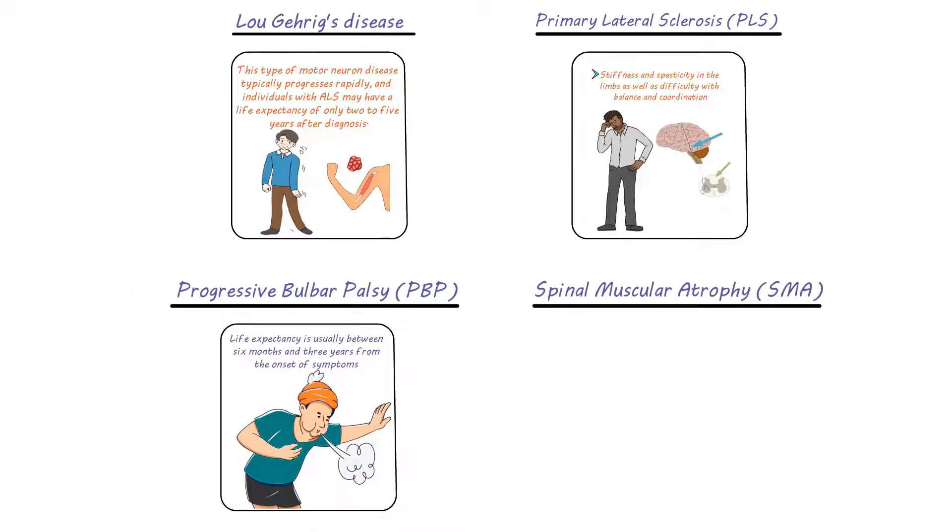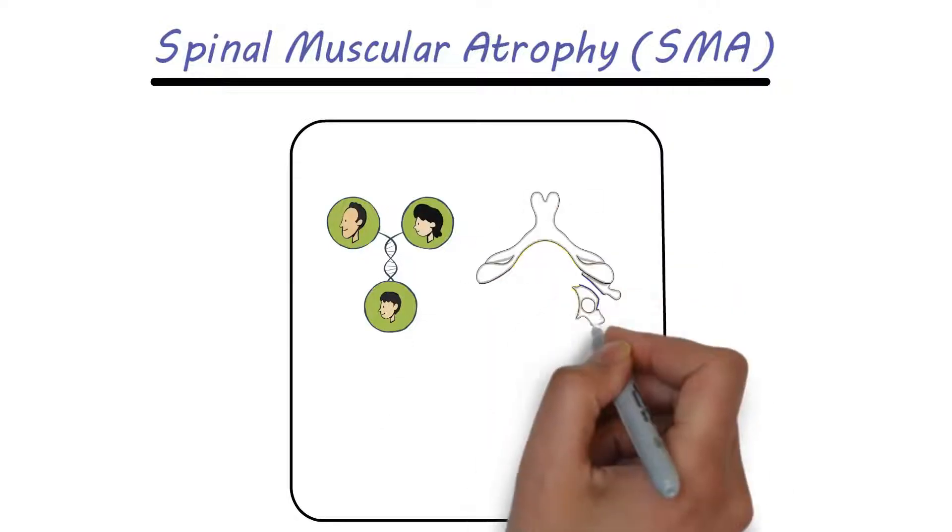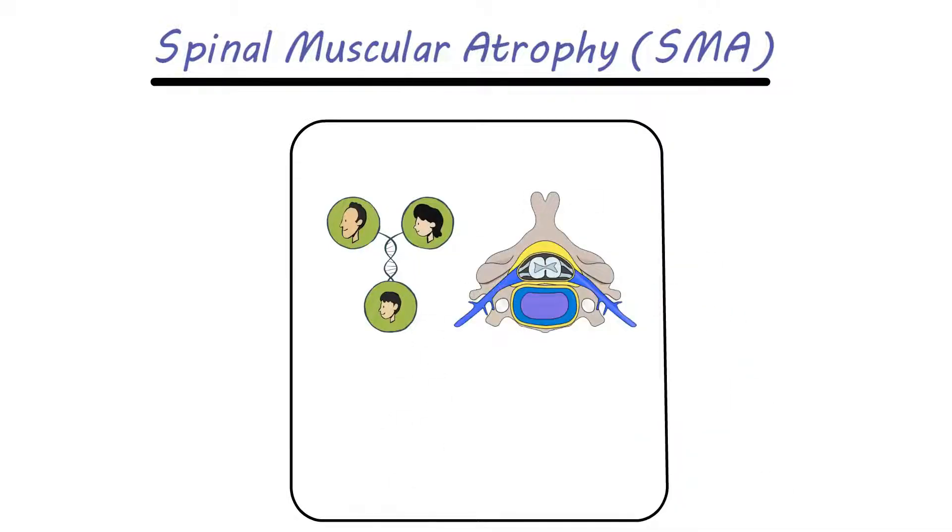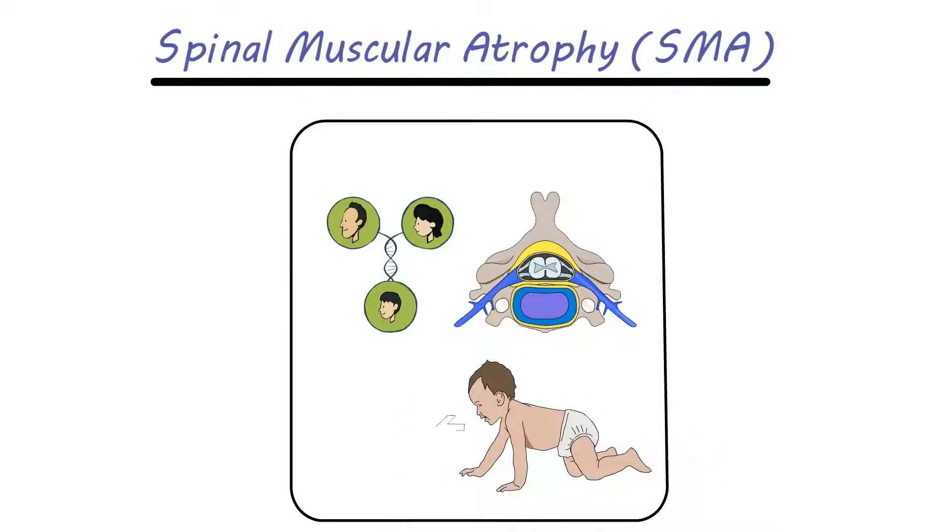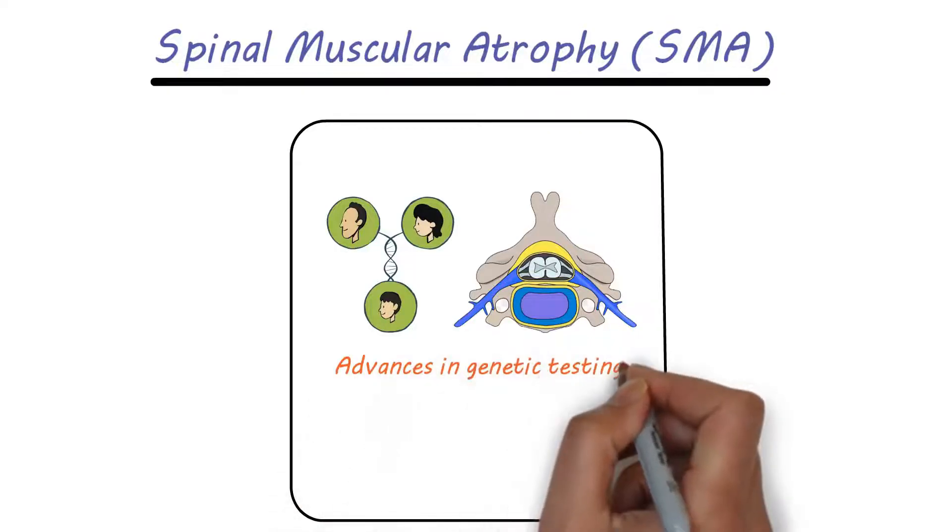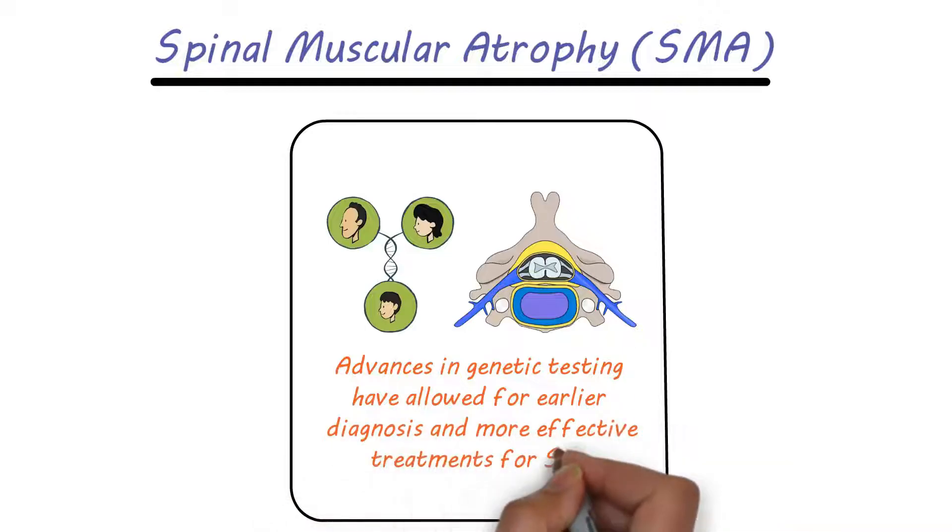Spinal muscular atrophy, SMA, is a genetic disorder that affects the lower motor neurons in the spinal cord. SMA typically presents in infants or young children and can cause weakness and atrophy in the limbs, as well as respiratory difficulties. Advances in genetic testing have allowed for earlier diagnosis and more effective treatments for SMA.